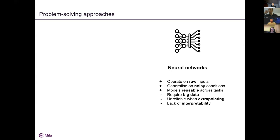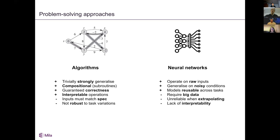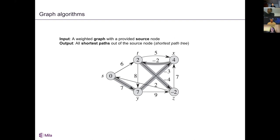Looking at these side by side, they're very complementary. The initial starting point of this research direction — better pioneered by Petar — is: can we get the best of both worlds? Can we get neural networks, or something in between, that has properties from algorithms like strong generalization and compositionality? The focus has been on graph algorithms because they're a great example problem on which to study this.